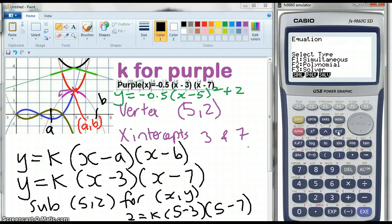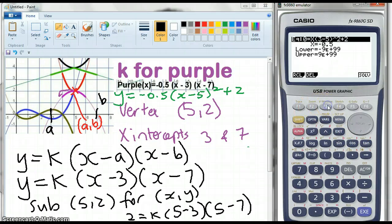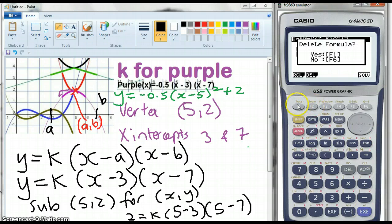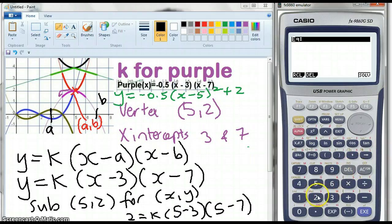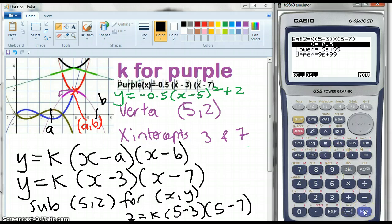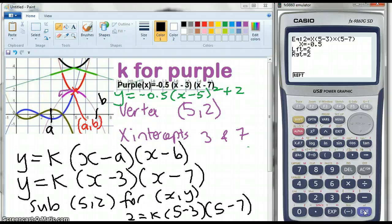So, I go again, f3 solver. Clear all of that. 2 shift equals, my k of x, bracket, 5 minus 3, close bracket. I'm not sure if I need times or not. I'll stick it in for fun. And 5 minus 7, close bracket. Execute. Execute again. Negative 0.5.